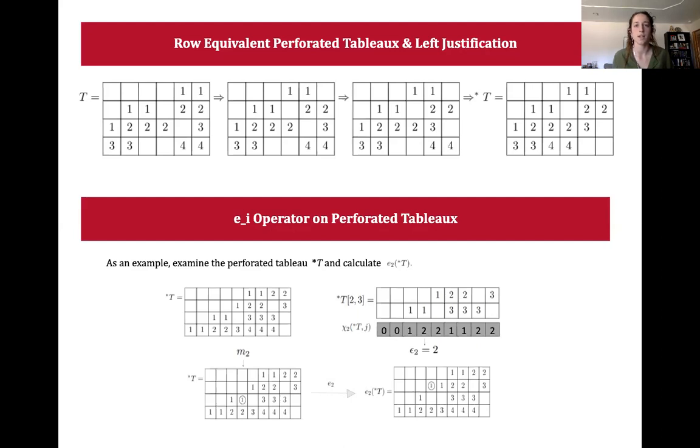In a crystal structure, EI connects p-tableau t to EI of t and so crystals look like rooted p-tableau moving up to new p-tableau by applying different E operators until no more content can be swapped.